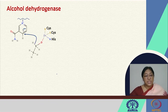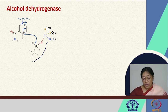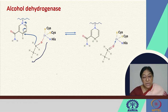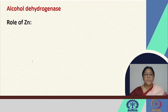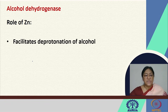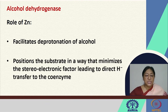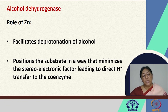In the reaction, the primary alcohol associates with the active site, a hydride ion is transferred, and then the product and NADH dissociate from the enzyme. The role of zinc is to facilitate the deprotonation of the alcohol in the initial step and to position the substrate in a manner that minimizes stereoelectronic factors, leading to direct hydride transfer to the coenzyme.